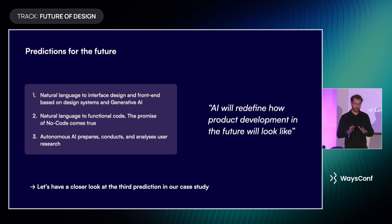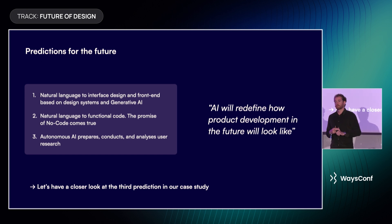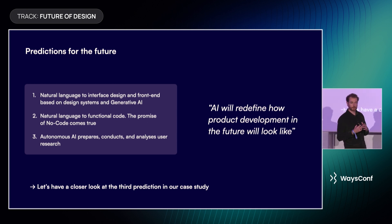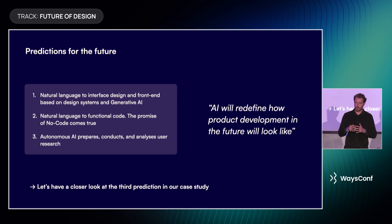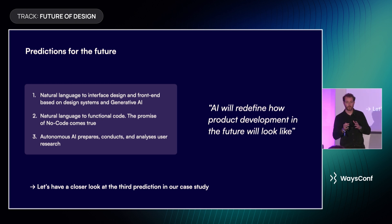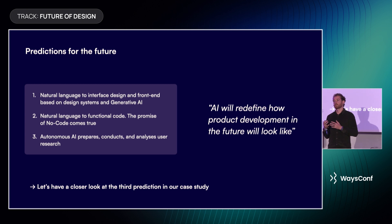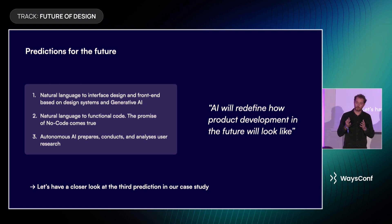I have three predictions. The first: we will see natural language to interface design, front-end based on design systems and generative AI, rather soon. The question is how good the quality will be. But if you have a well-maintained design system and want to do something mundane like a login form, there might be real value in automating that — so you can focus on the challenging parts, on what we actually build rather than just moving a button component to the right place.